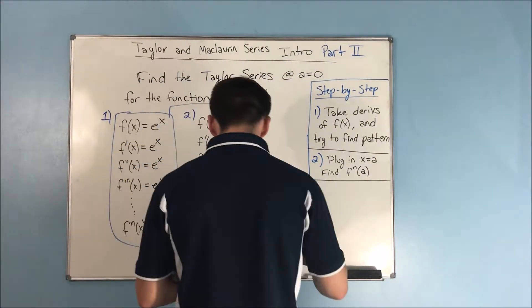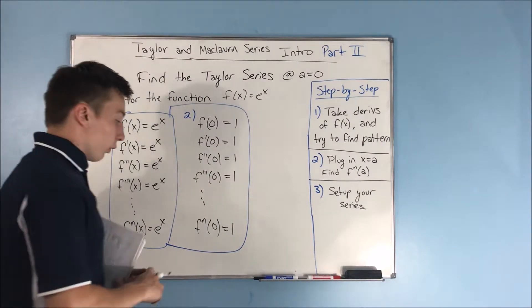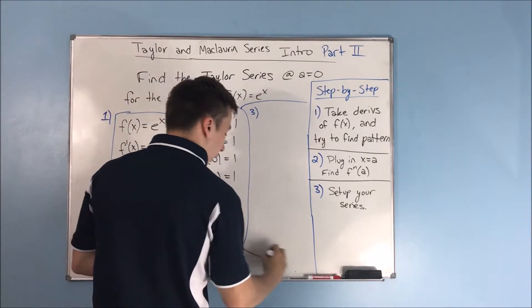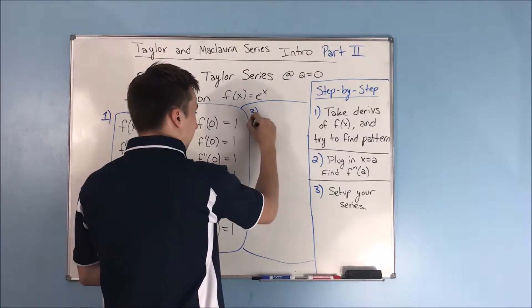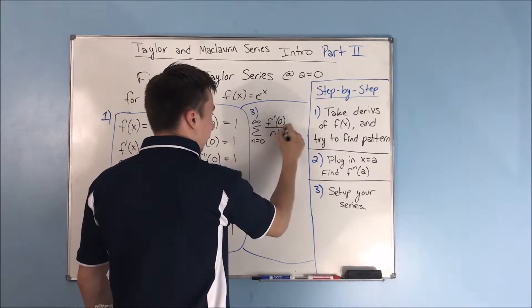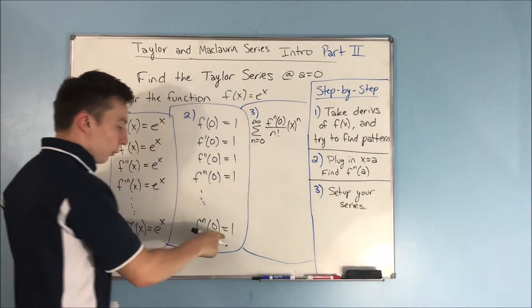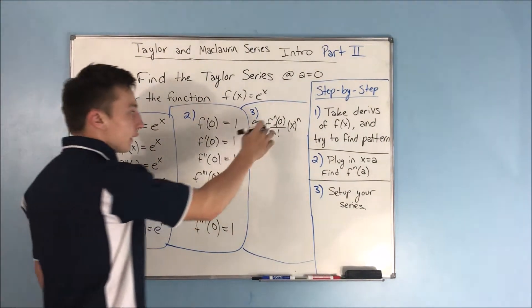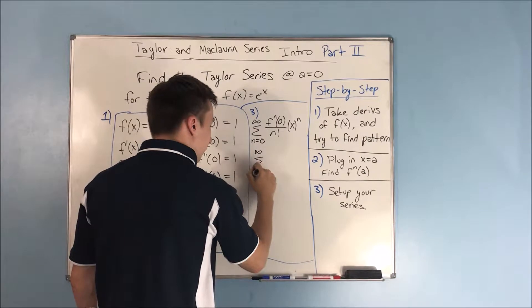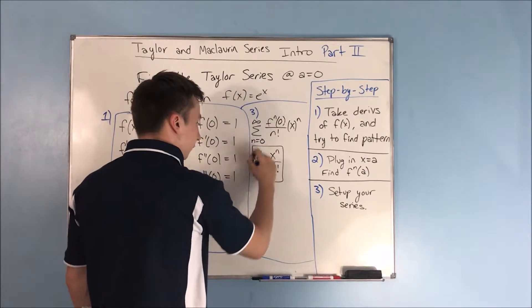Now we're moving on to the third step, which is to set up your series. We're starting off with the sum from n equals zero to infinity of the nth derivative of f at zero over n factorial times x to the n. We know the nth derivative of f at zero is one, so we simplify and now we have x to the n over n factorial as our series.